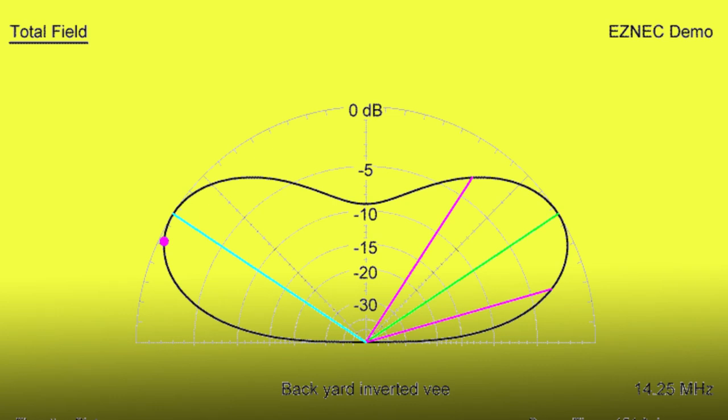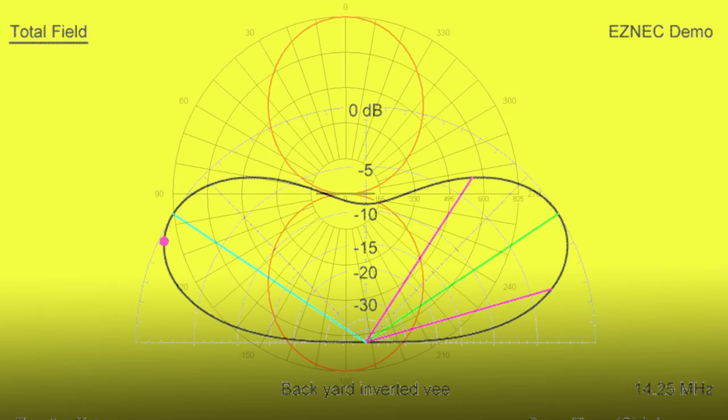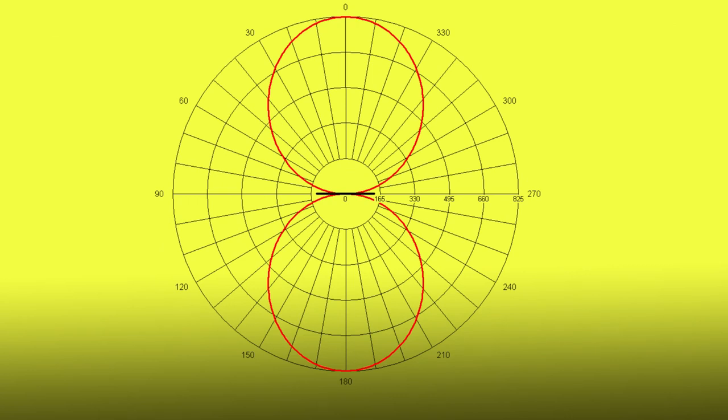This plot here is for a 20 meter dipole up at about 30 feet. So let's take a top-down look at our squashed donut. As we can see from the picture, the donut is lined up east to west, while our pattern is primarily north to south.